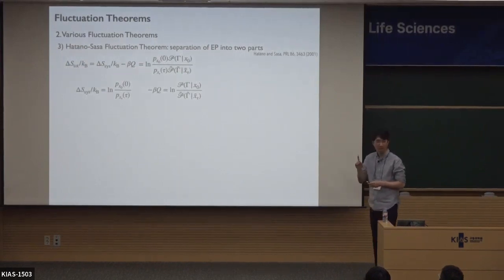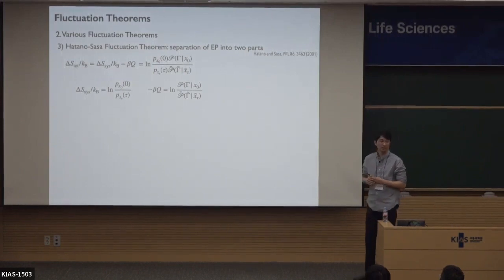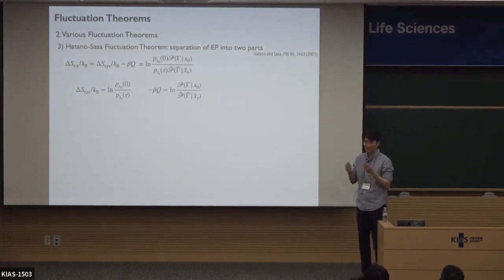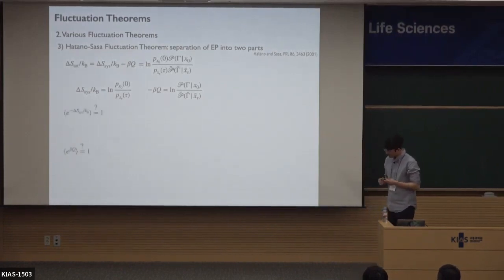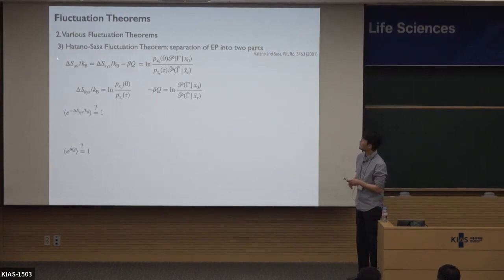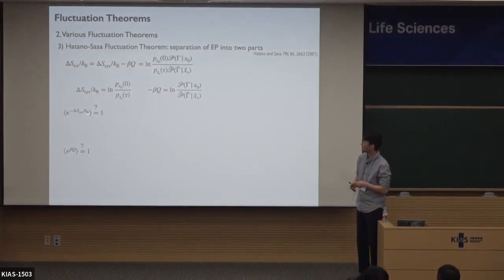One natural separation of the total entropy into two parts is: this term is the system entropy change, and this term is the reservoir entropy change. This is one natural separation of the total entropy production into two parts. Then the next question is: does this system entropy production satisfy the fluctuation theorem, or does this heat satisfy the fluctuation theorem?